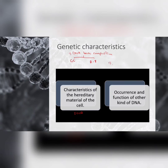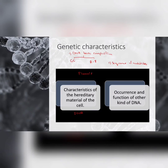In addition to chromosomal DNA, plasmid DNA may be present in microbial cells. Plasmids are small circular DNA molecules capable of autonomous replication within bacterial cells. Their presence can confer special characteristics on the cells that contain them, such as the ability to produce toxins or to become resistant to various antibiotics.